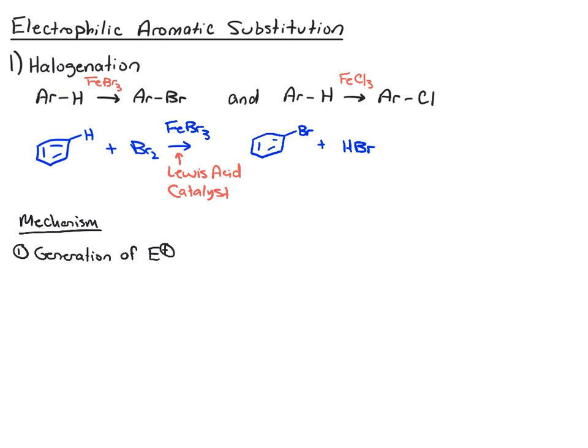I'm going to abbreviate electrophile as E+, so generation of our electrophile. And that happens when the bromine and the iron tribromide react together. So here's the bromine, Br2. Here is the iron tribromide. And because this is a Lewis acid, Lewis acids want electrons. It's an electron pair acceptor. Well, the bromine has electron pairs. So the first step